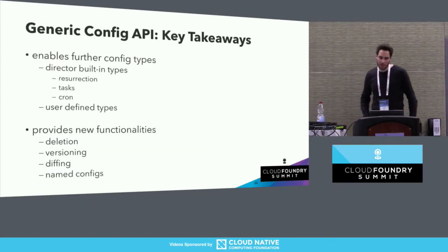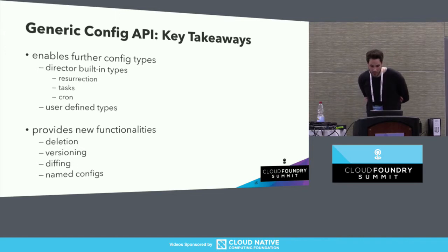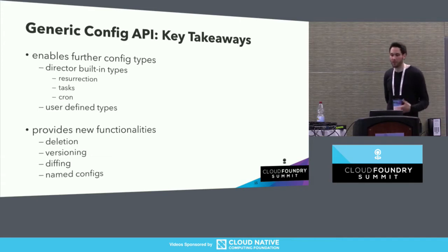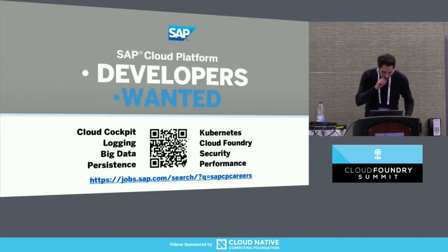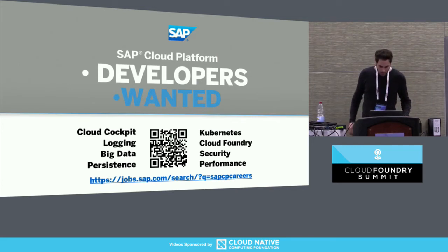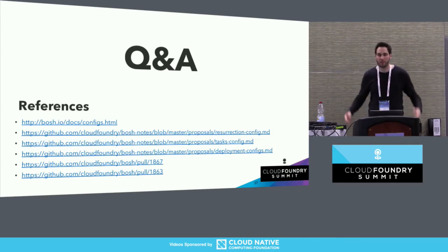The key takeaways of this session are that the generic config API enables new director built-in types like resurrection config, tasks config, cron config, or deployment config. And you as a BOSH operator can use the generic config API for everything where you need to manage configuration files, because it provides versioning and diffing functionalities out of the box. Thank you for joining the talk — it would be interesting to hear your ideas about new config types for your use cases.